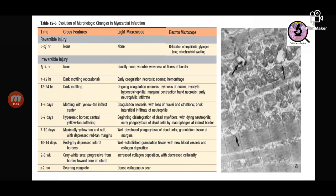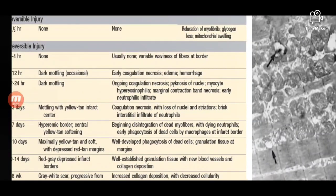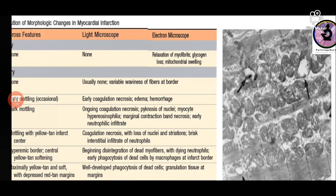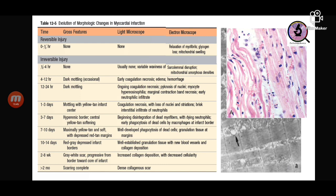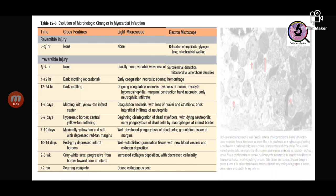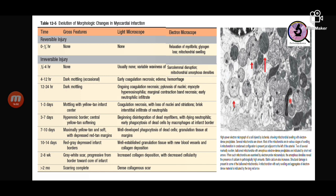Within half an hour to four hours, irreversible injury starts, though we cannot see anything grossly. The earliest light microscopic change is waviness of the fibers at the border — on the right are normal cardiac myocytes and on the left are wavy cardiac myocytes. Electron microscopically, within half to four hours, we start seeing mitochondrial amorphous densities — small arrows mark electron densities inside the mitochondria.